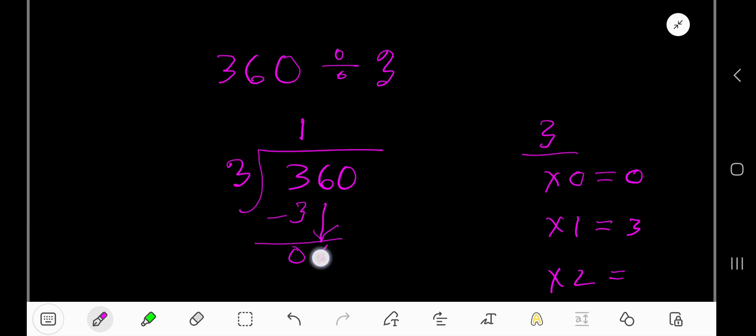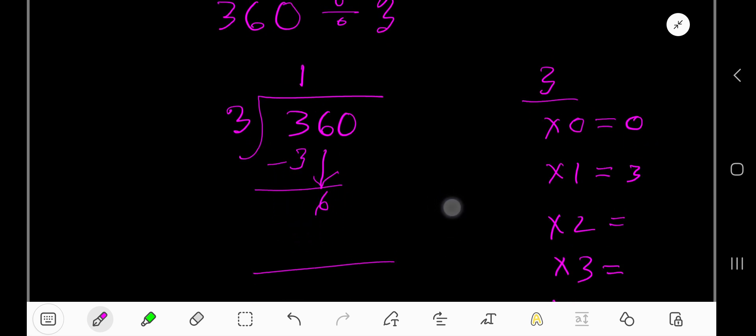Bring down this digit 6. 3 goes into 6 how many times? 3 times 1 is 3. 3 times 2 is 6. Just add 3 with the previous step. So 3 goes into 6, 2 times, right?